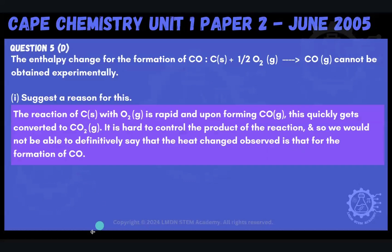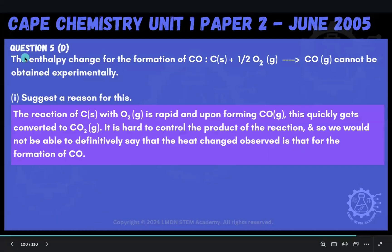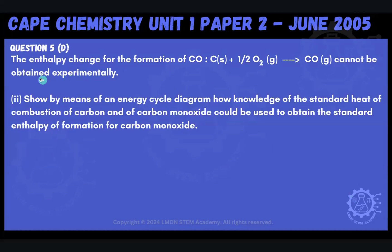Let's move on to part two. Part two says that we have to show by means of an energy cycle diagram how knowledge of the standard heat of combustion of carbon and of carbon monoxide could be used to obtain the standard enthalpy of formation of carbon monoxide. So what they're saying is that we cannot find this formation experimentally, so we're going to have to use some energy cycles. We're going to have to use Hess's law to be able to calculate it.